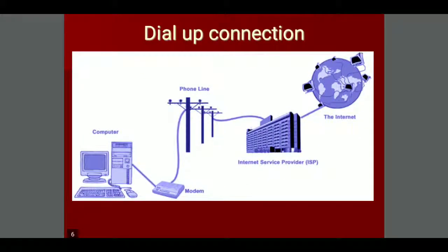This is the figure for a dial-up connection. It goes from the computer to the phone line, and from the phone line it goes to the service provider, and from the service provider it is connected to the internet. This is how the circuit is complete and we get internet at our homes.